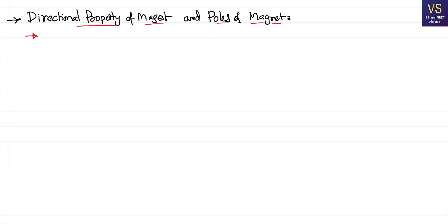To understand why this is happening, we shall understand how a magnet looks like. This is a magnet — assume it is in the shape of a bar, and it is called a bar magnet.